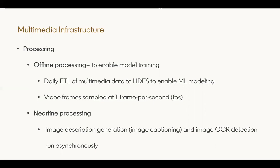Offline pipelines are not just limited to model training. We can also leverage them to generate features on a daily or weekly cadence to be used in online systems. However, this comes at a cost of quick feature availability, since these are scheduled either daily or weekly. For this reason, nearline processing systems are used to provide features quickly via asynchronous processes that can generate features whenever a user uploads new content.